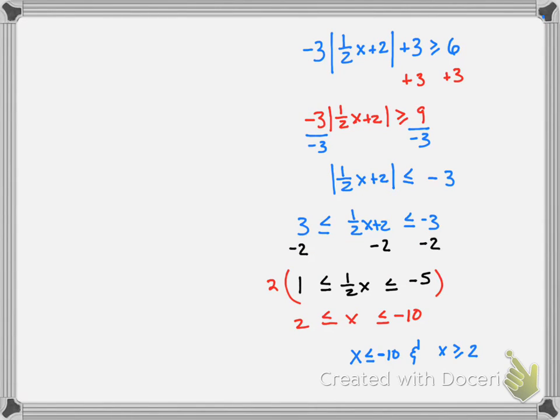When we continue on, you can see the work. We have x is between negative 10 and 2, but it's not really between. It's greater than 2 and less than negative 10. If we looked at each one of these individually, there is no number that's both less than negative 10 and greater than 2.